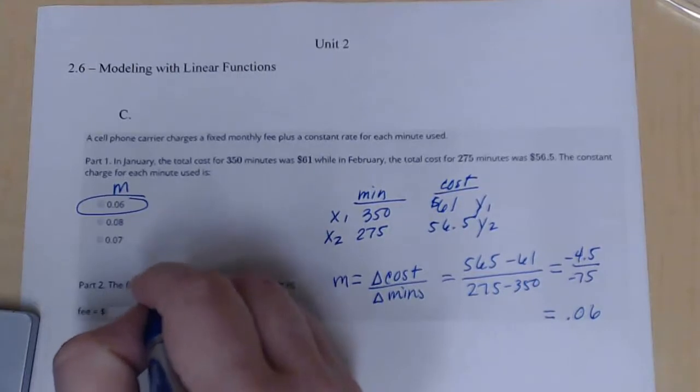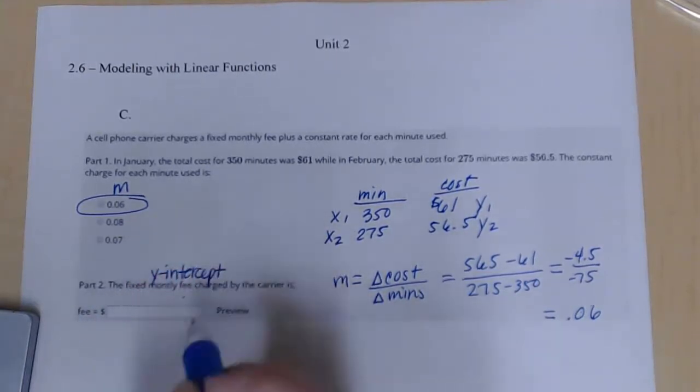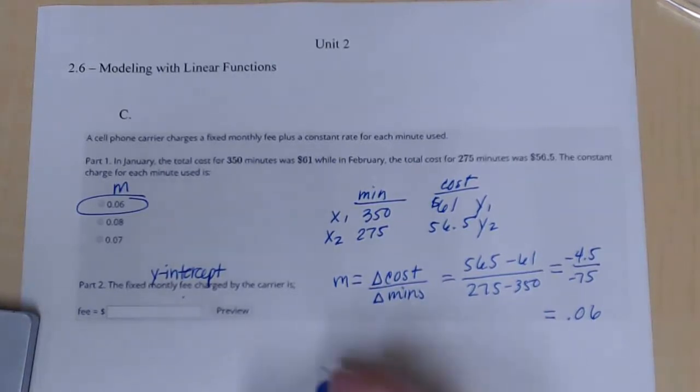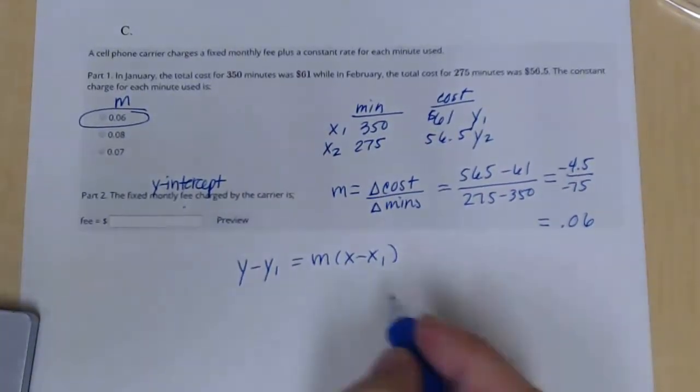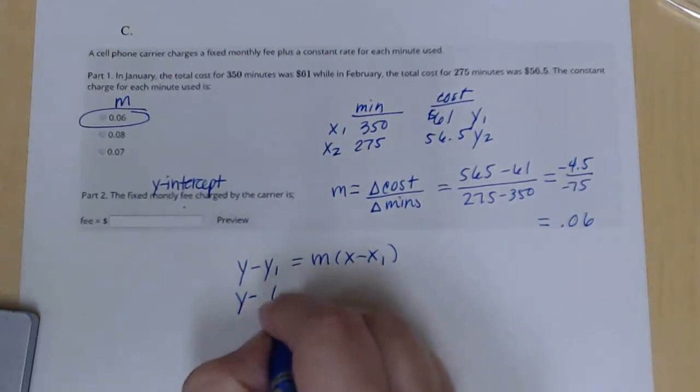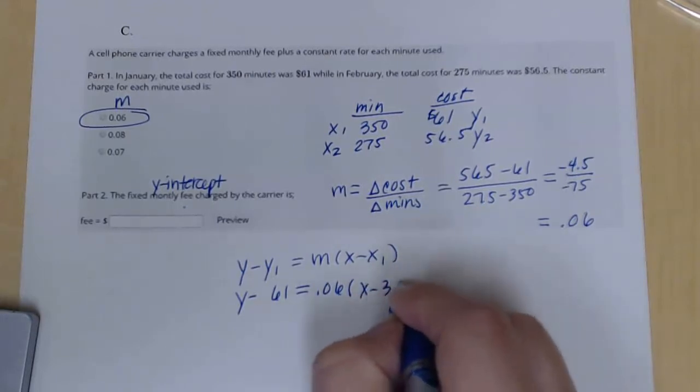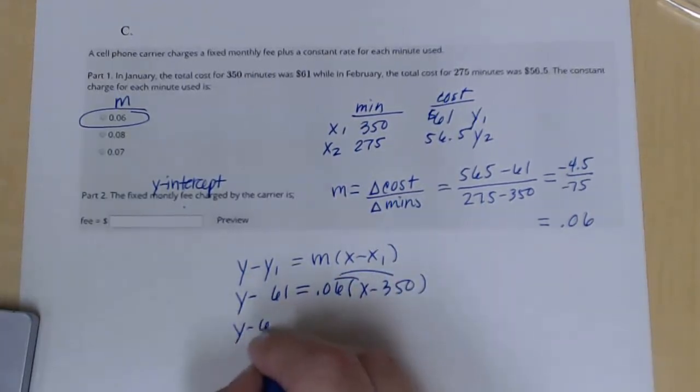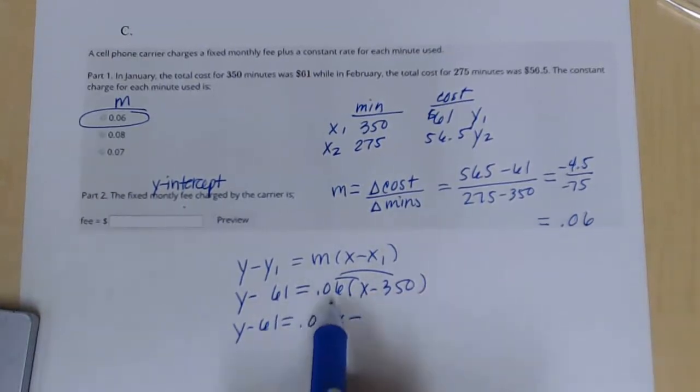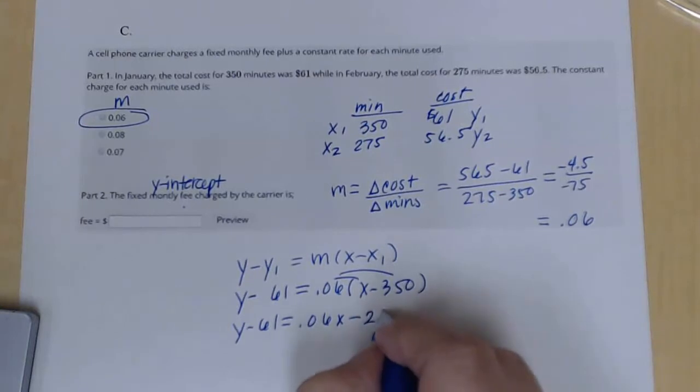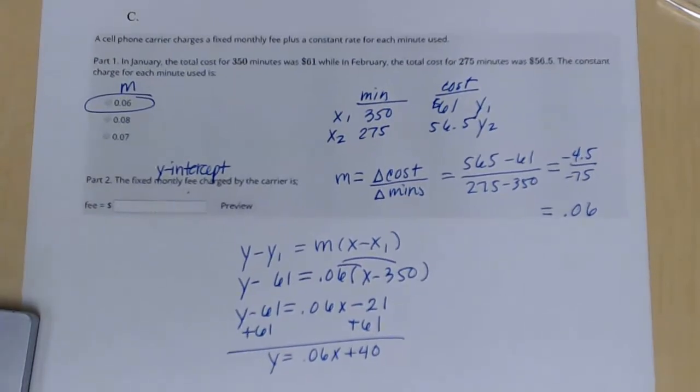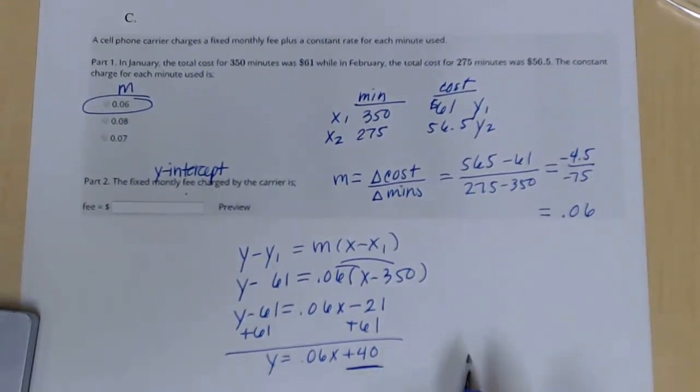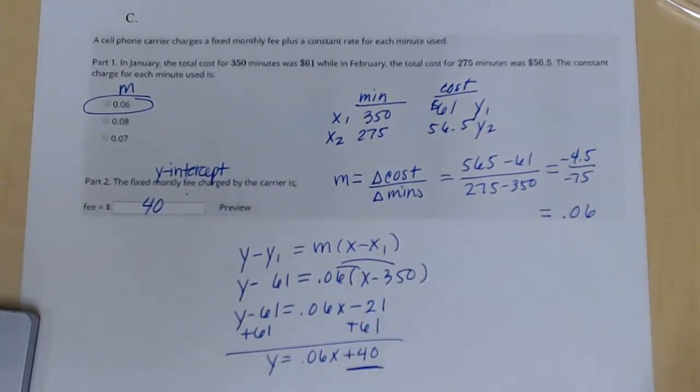The fixed monthly charge, so that's going to be my Y intercept, would be what? So we've got to work all the way through it like we did in that first example. So I'm going to say Y minus Y1 equal to M, X minus X1. Plug in all my information. So Y minus 61 equal to 0.06 times X minus 350. Distribute. 0.06 times negative 350 gives me negative 21. And then add 61. So this gives me 0.06X plus 40. And so the question says, what's the fixed monthly fee? That would be that plus 40.